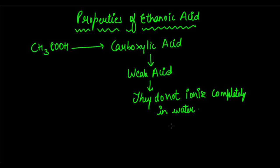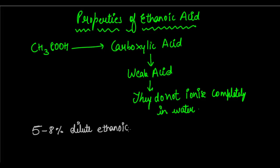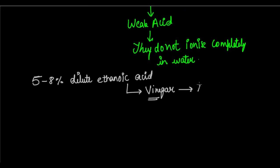So CH3COOH, that is ethanoic acid, is a weak acid and does not ionize completely in water. Another property is its dilute form — 5 to 8% dilute ethanoic acid is basically what we call vinegar. Vinegar is a food ingredient used to make food tangy and sour, giving a sour taste.